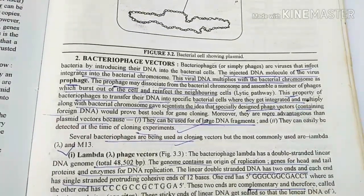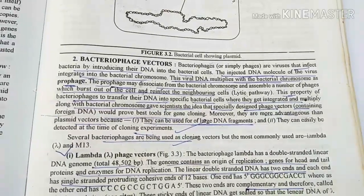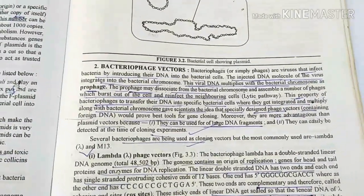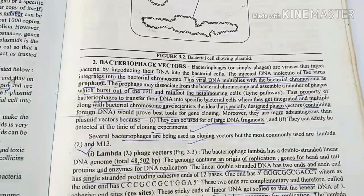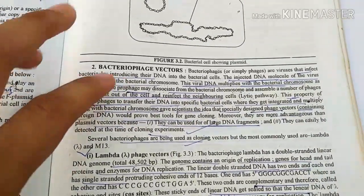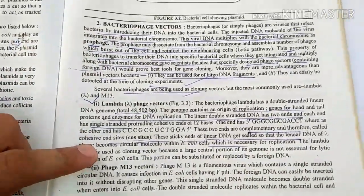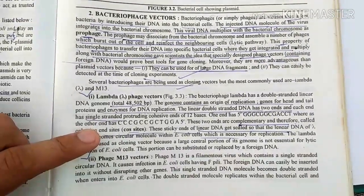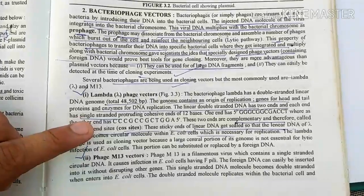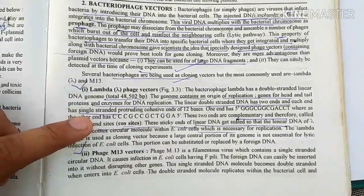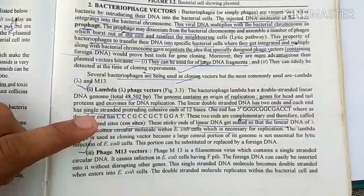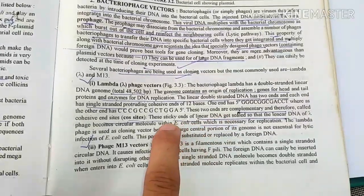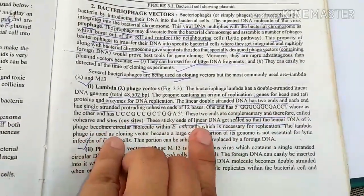After plasmids, we have bacteriophages. The injected DNA of the virus is integrated into the bacterial chromosome. If the virus attacks, the gene is transferred to other bacteria — this is the natural transduction method. We use lambda phage as a vector. Lambda phage is a bacteriophage with double-stranded DNA of 48,000 base pairs. The linear double-stranded DNA has two cohesive ends called cos sites. These sticky ends can be sealed, making the lambda phage circular.